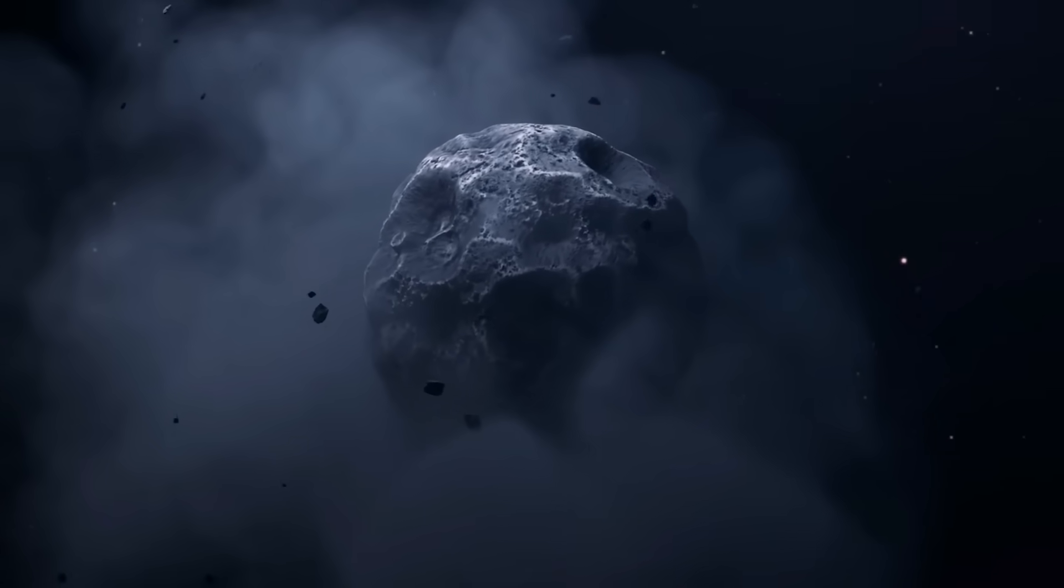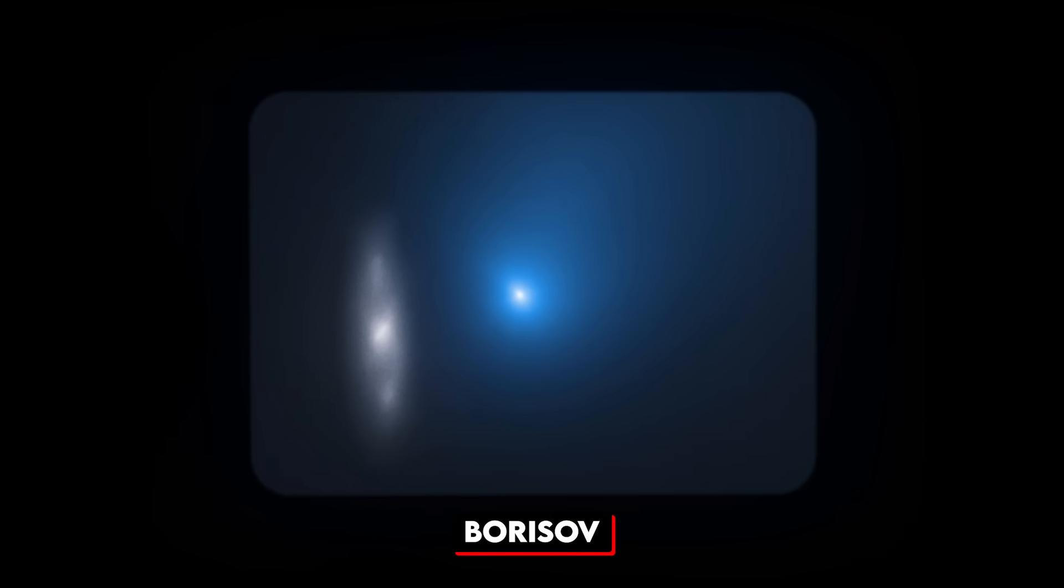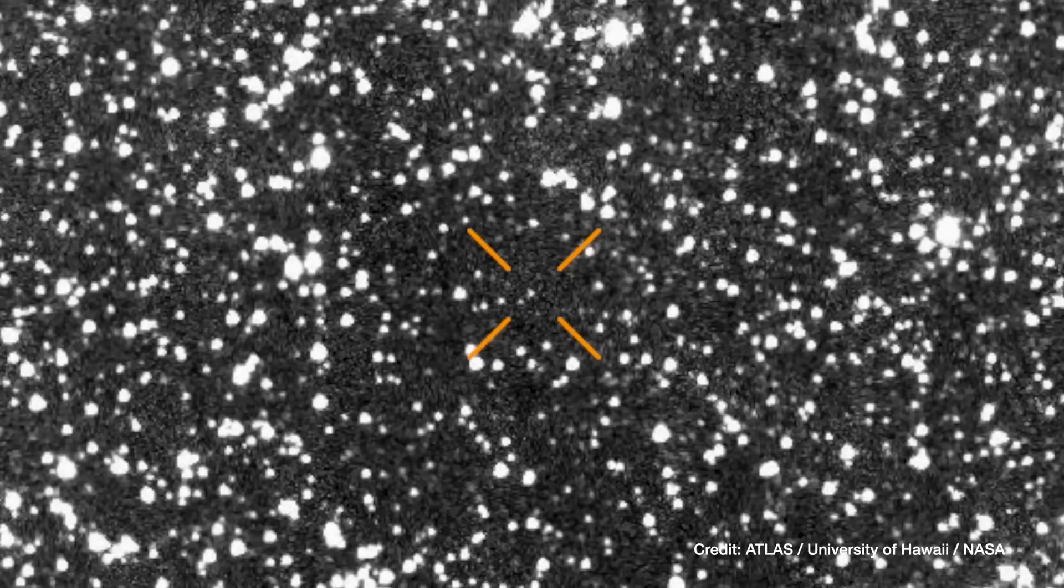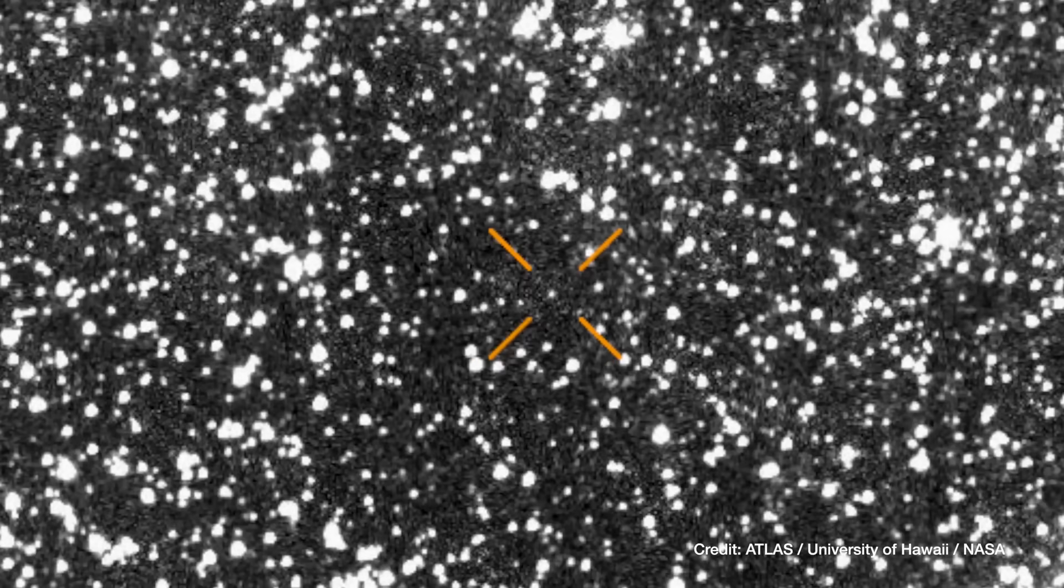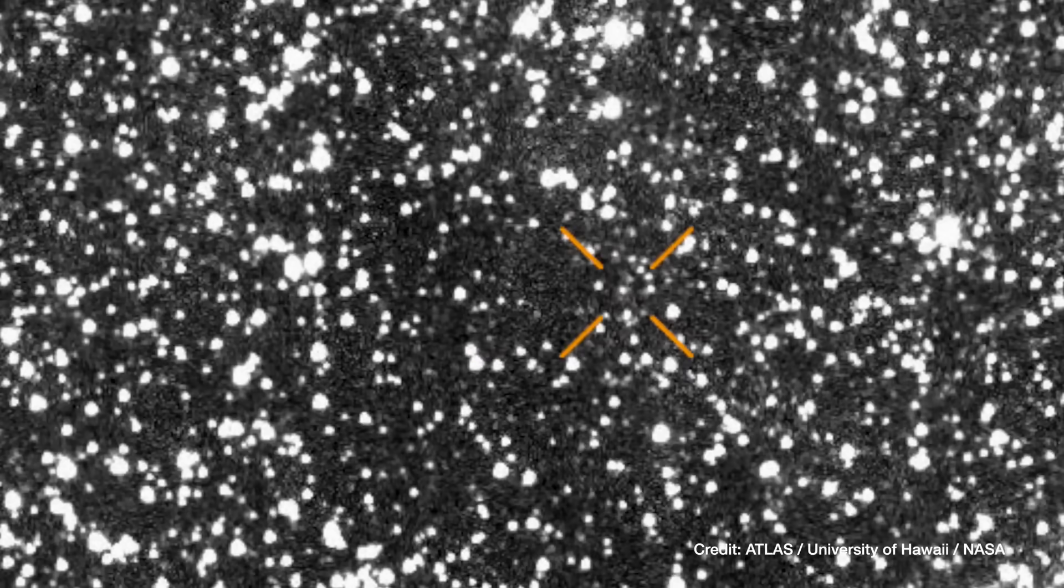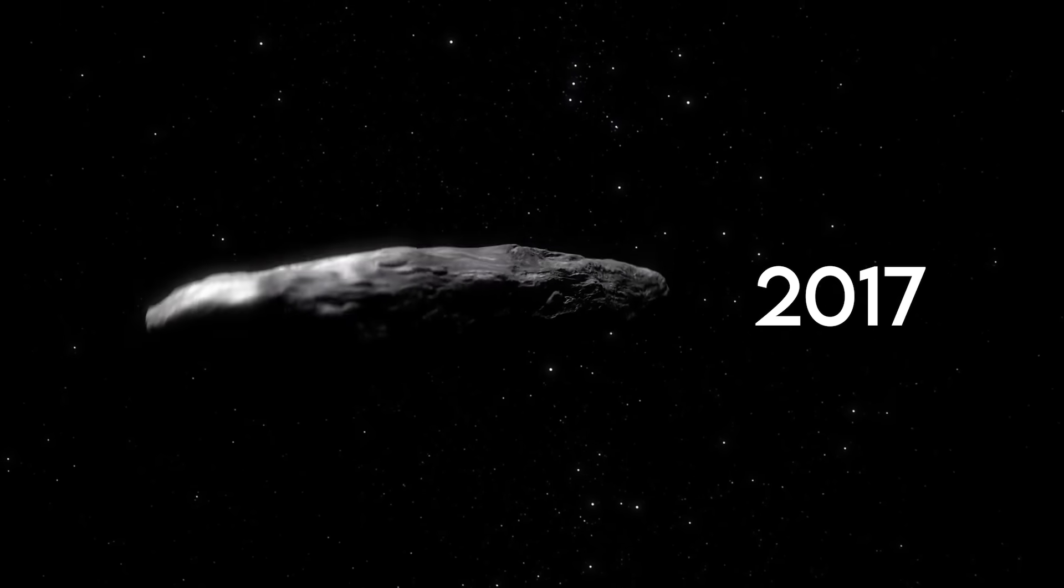Typical comets, whether from our solar system or previous interstellar visitors like 2I Borisov, are dominated by water vapor. But 3I Atlas is radically different. Its coma is saturated with carbon dioxide, with a CO2 to water ratio of 8.1. That's higher than any comet ever measured, and it's not even close.